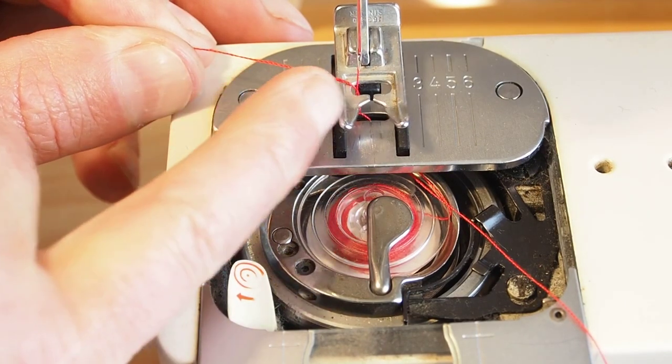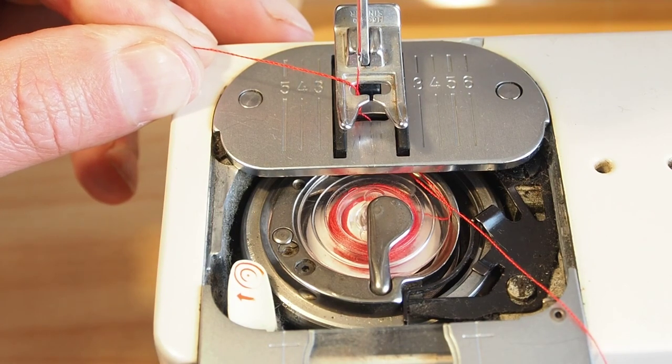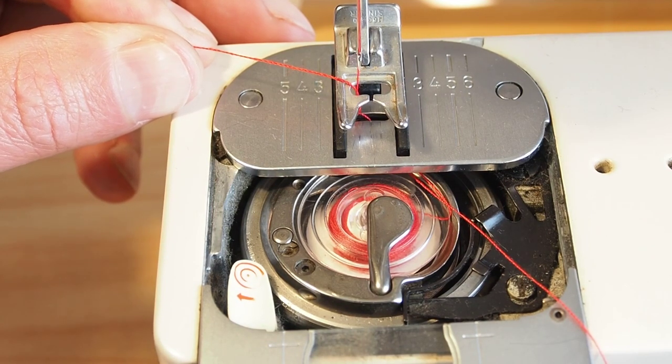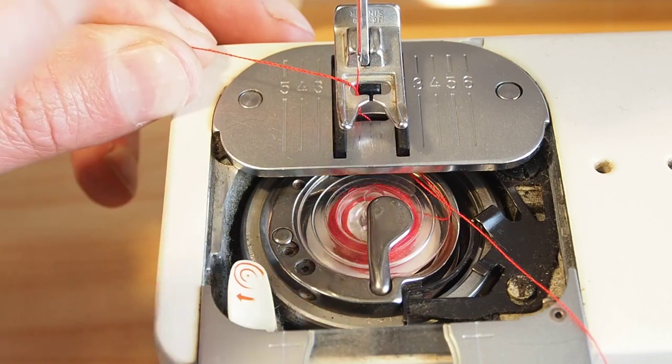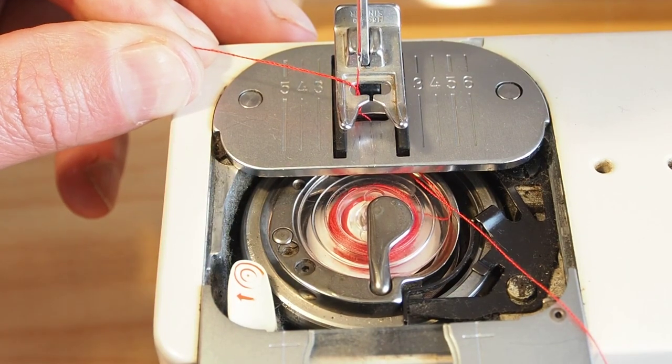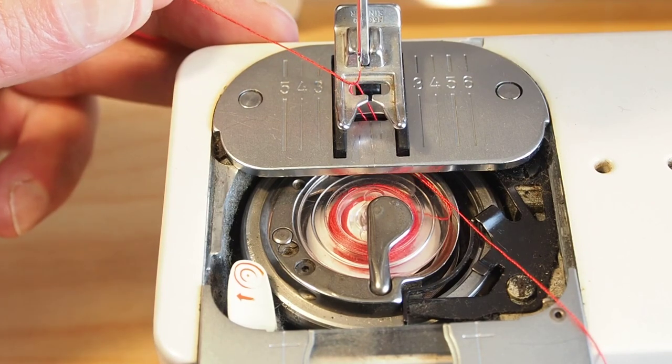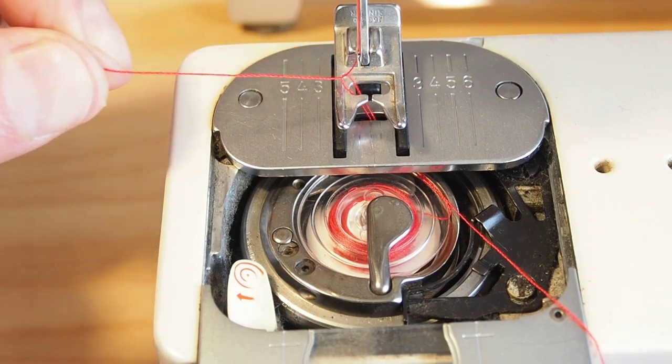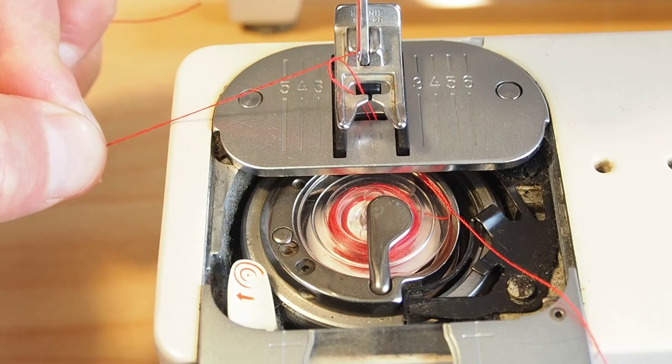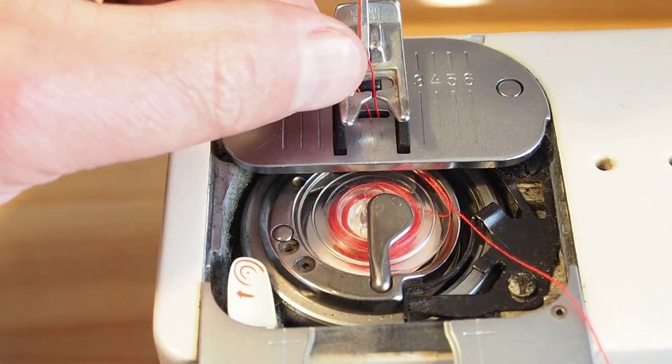Turn the machine one full revolution. You can see in this instance I'm just holding the thread off to the side. As long as you don't pull on the thread before the machine's gone through its full revolution, that's pretty much all you need to think about. Once it's gone through its full revolution, you can then pull the top thread. It should have hooked the bobbin thread, which it has.